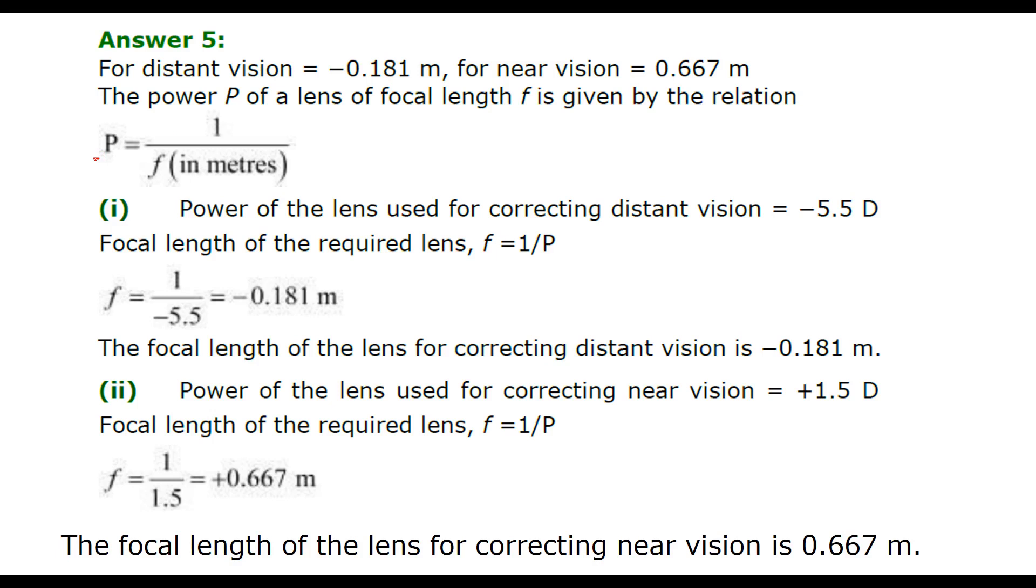The power is related inversely to the focal length, P = 1/f, and this has to be in meters. In the first case, the power is minus 5.5, so 1 by minus 5.5 gives you minus 0.181. In the second case, we have plus 1.5 D, so f = 1/P = 1 by 1.5 which gives 0.667. The focal length for distance vision is minus 0.181 meter and for near vision it is 0.667 meter.